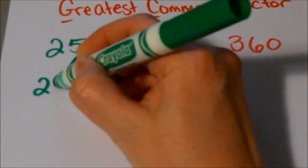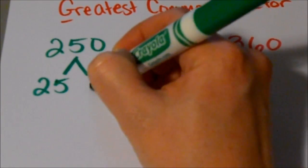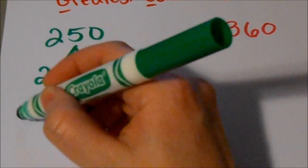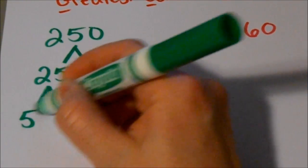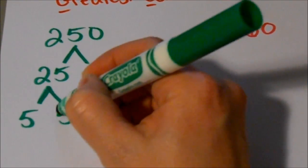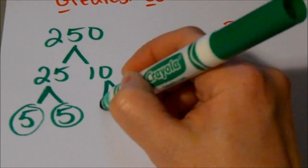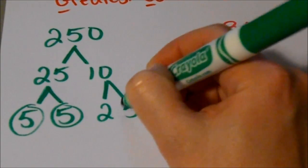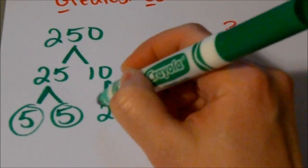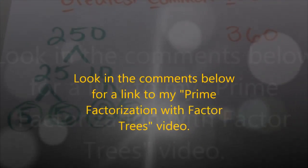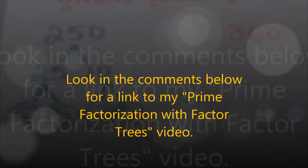For 250, I'm going to factor that into 25 times 10. Then each of those numbers can be factored further: 25 is 5 times 5, which are both prime, and 10 is 2 times 5, which are both prime. So I'm done with that one — I have all of my prime numbers that make up 250.